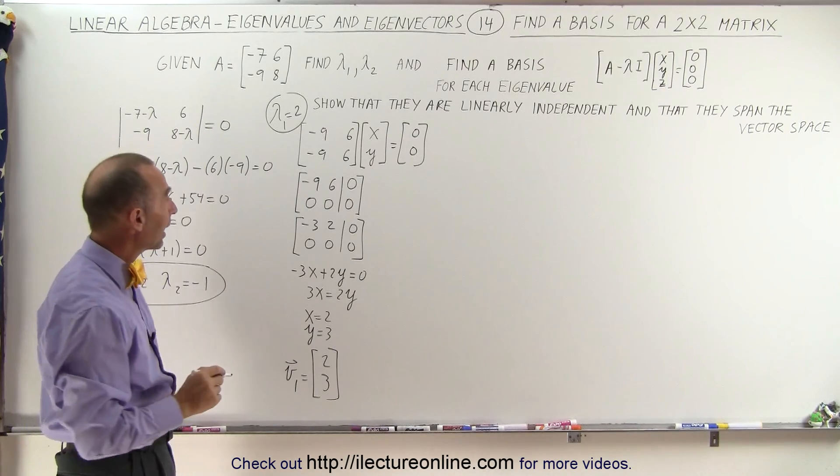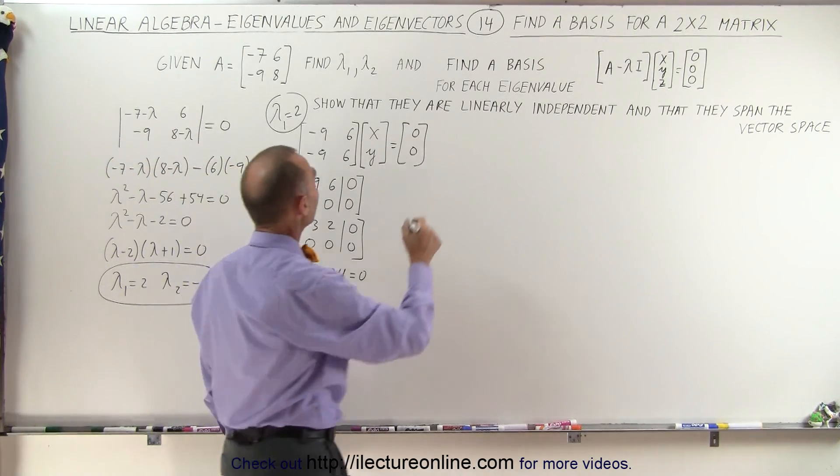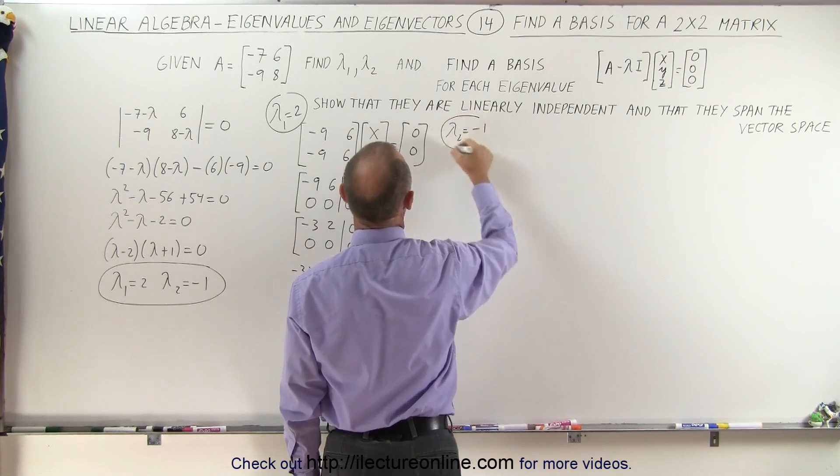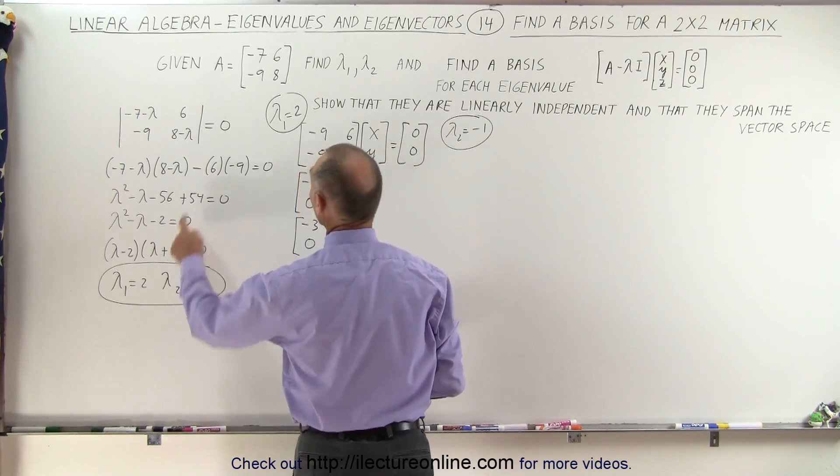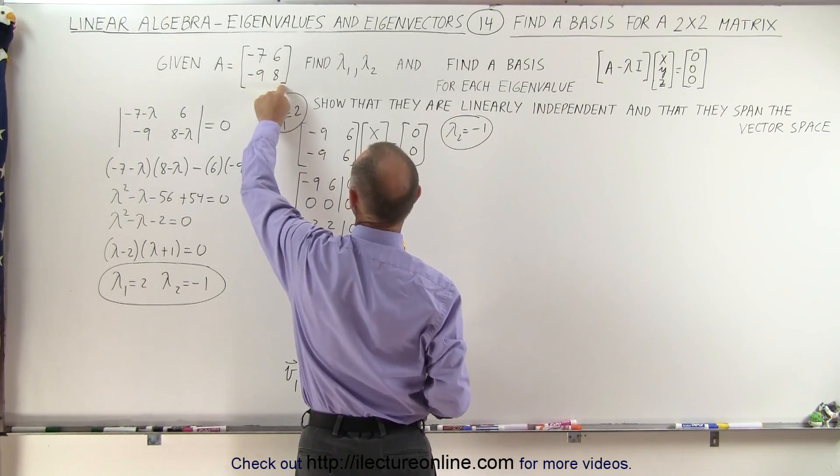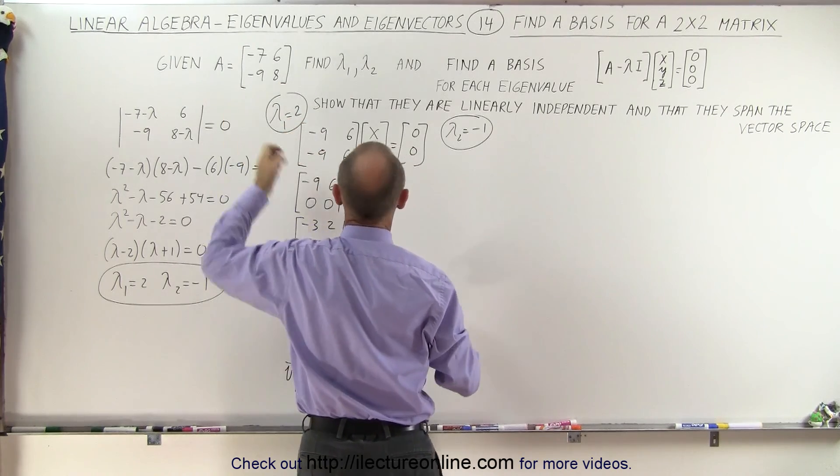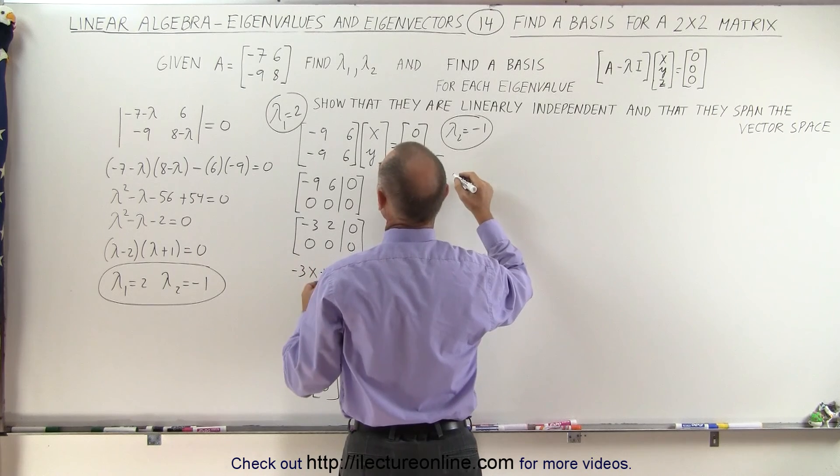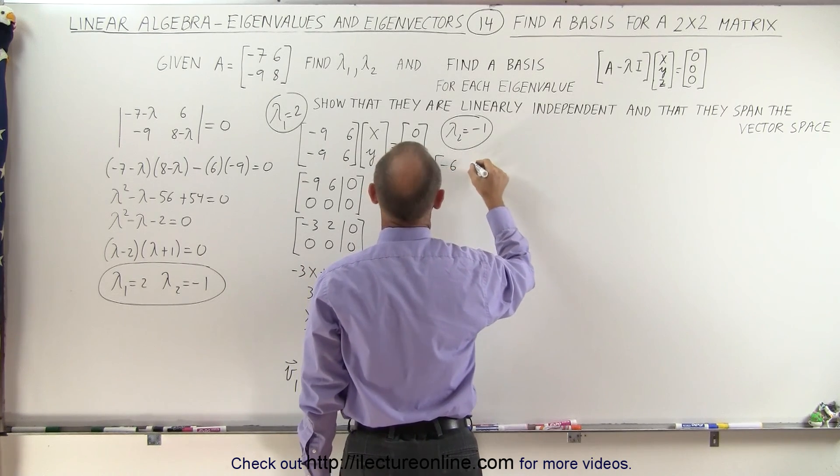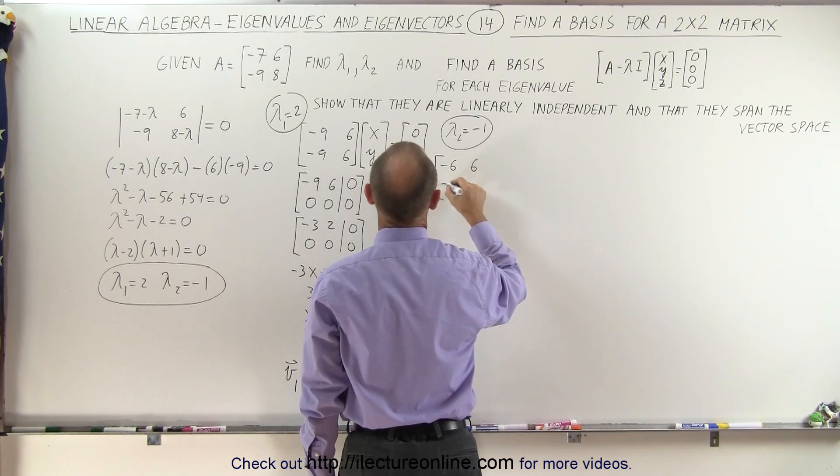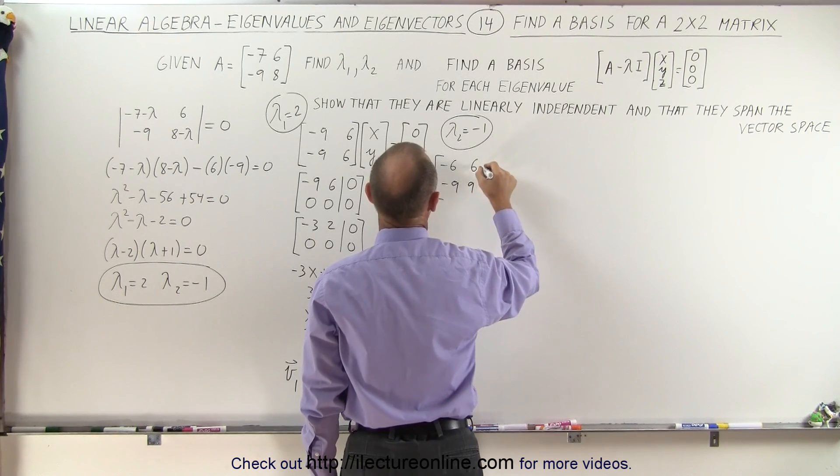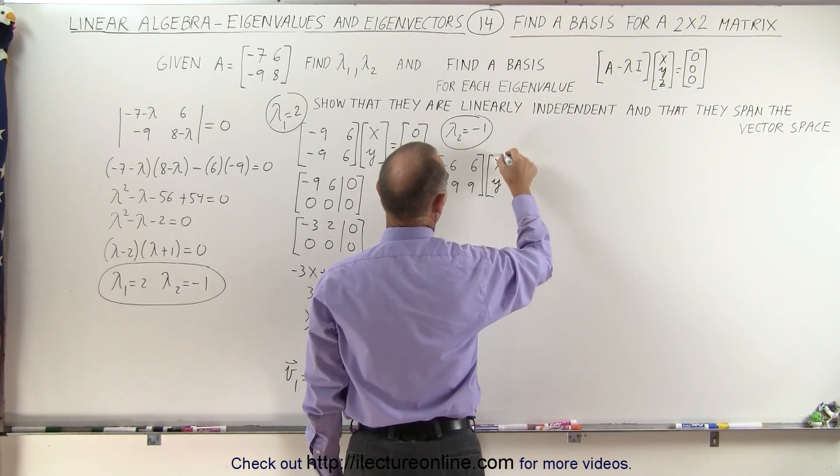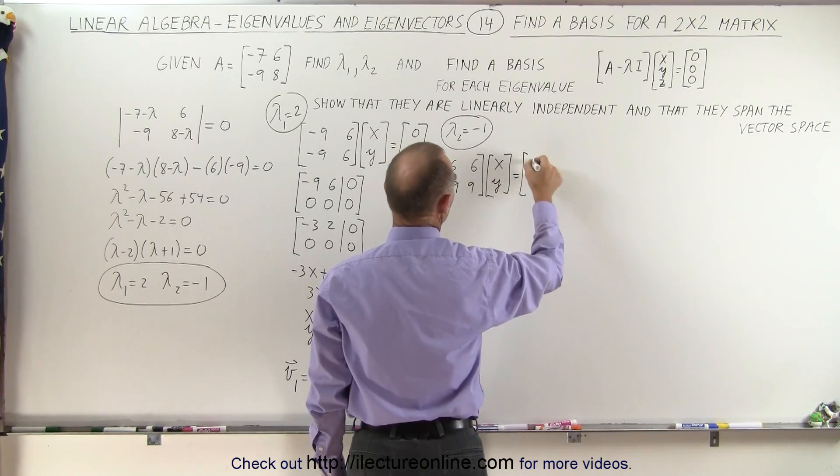Now we're going to do it again for the second eigenvalue, lambda sub 2 equals minus 1. So we subtract the minus 1 from the diagonals, which is really adding a 1 to the diagonals, which means that the matrix becomes minus 7 plus 1 is minus 6, and 6, and the next one is going to be minus 9 and 9. And we multiply that times x and y and set that equal to the 0 vector.